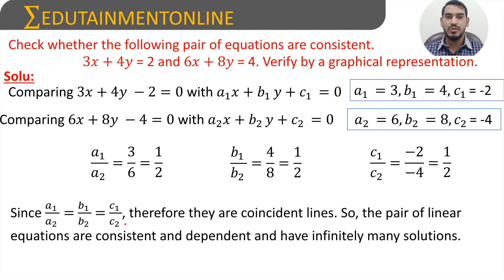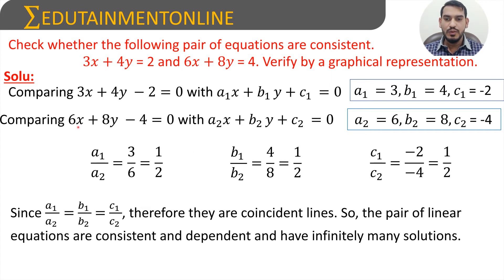Therefore they are coincident lines, so the pair of linear equations are consistent and dependent and have infinitely many solutions. The two lines are the same, and hence they meet at infinitely many points. If you take 2 as a common factor in the second equation 6x plus 8y minus 4 equals 0, that gives 2 times of 3x plus 4y minus 2 equals 0, confirming the two lines are the same.